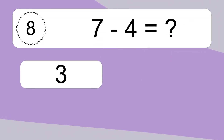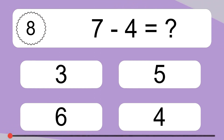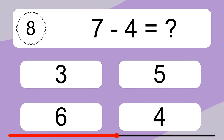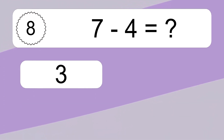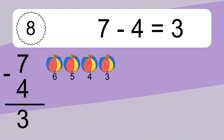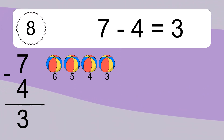7 minus 4 equals what? 7 minus 4 equals 3. Let's count it: 6, 5, 4, 3.